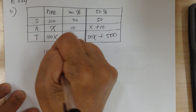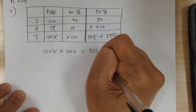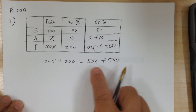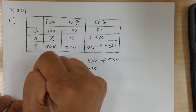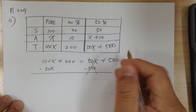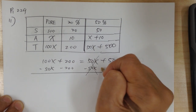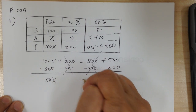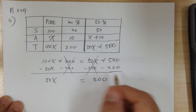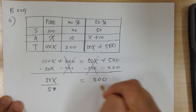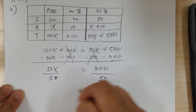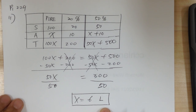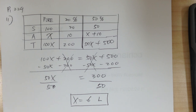Here's your equation: 100X plus 200 equals 50X plus 500. Move the variable to this side — minus 50X on both sides, this cancels out. Move the number to this side — minus 200. This cancels out. So I get 50X equals 300, divide by 50, divide by 50. X equals 6 liters. Don't forget your label. Let's go to the next one.